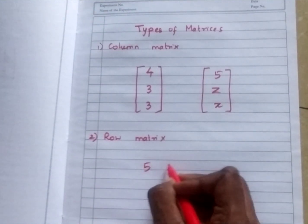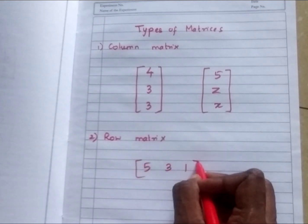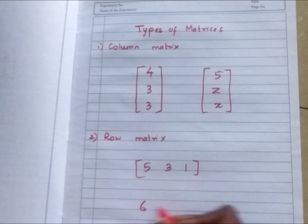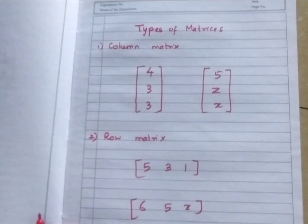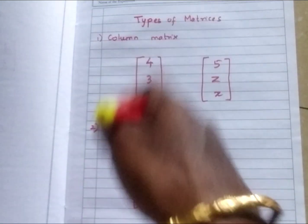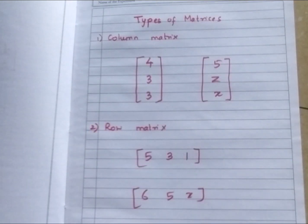Now row. Row is like this, only the sleeping line. 6, 5, X. This is called row matrix. Column means only column, row means only like this sleeping side.